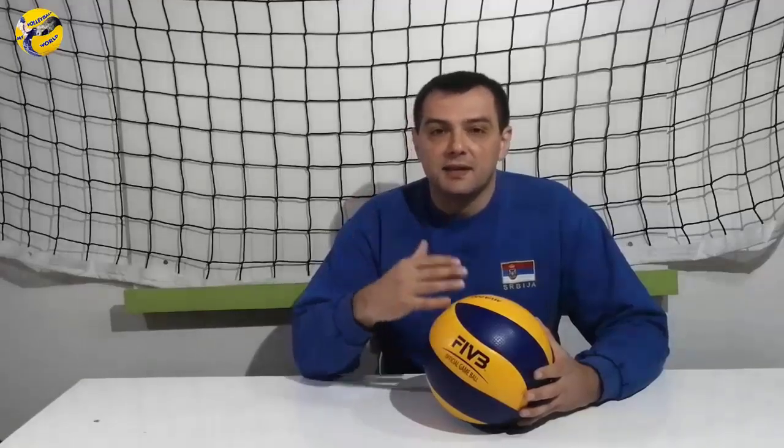With two teams on the court, one starting the serve and the other receiving, we can recognize three phases within the game that change from one team to another in that single point. Let's say team A is serving and team B is receiving. Since team A is serving, it begins with a phase called K1, which contains actions of serving, blocking, covering block, and defending.